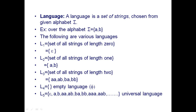Language L3 is the set of all strings of length 2 over {a, b}. Each string must have length 2, so the possibilities are: aa, ab, ba, bb — total 4 strings. This is also called a language because a language is a set of strings chosen from a given alphabet.